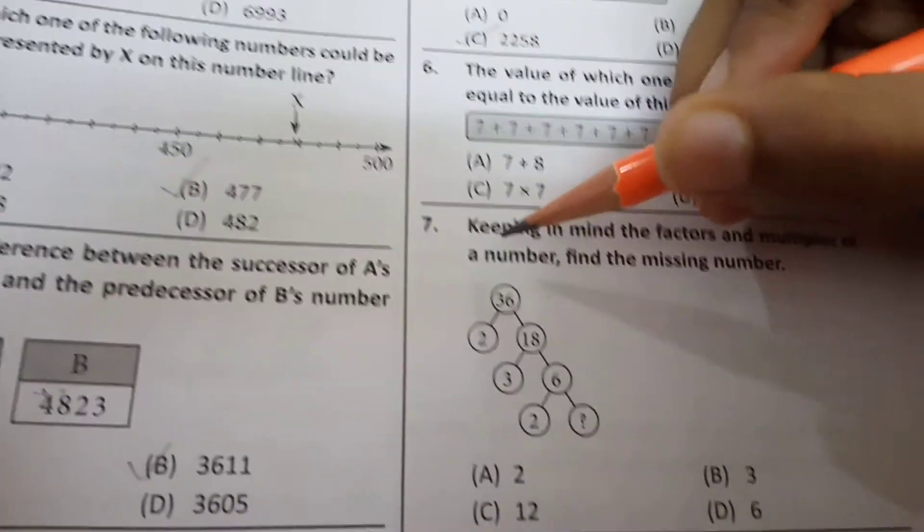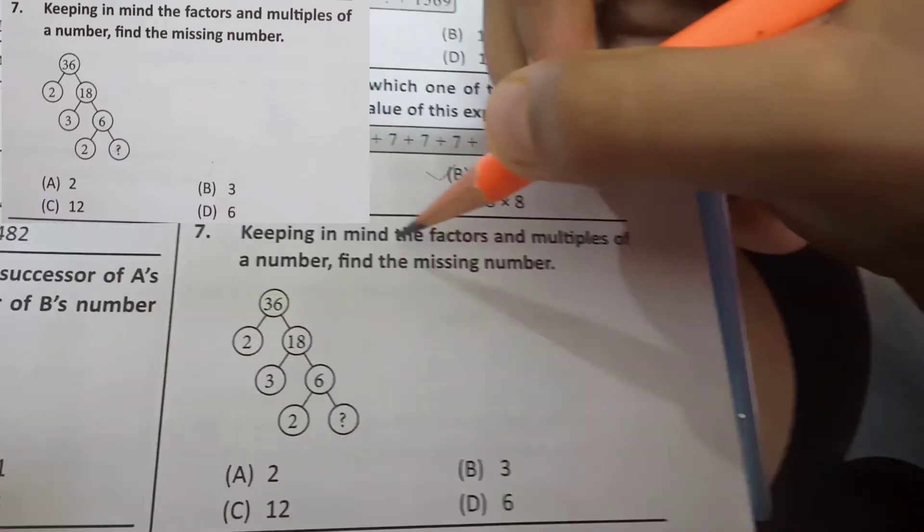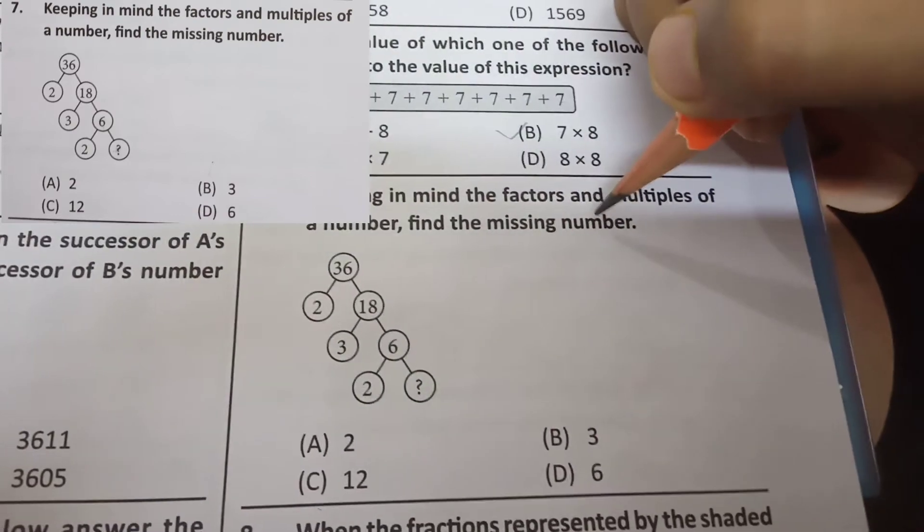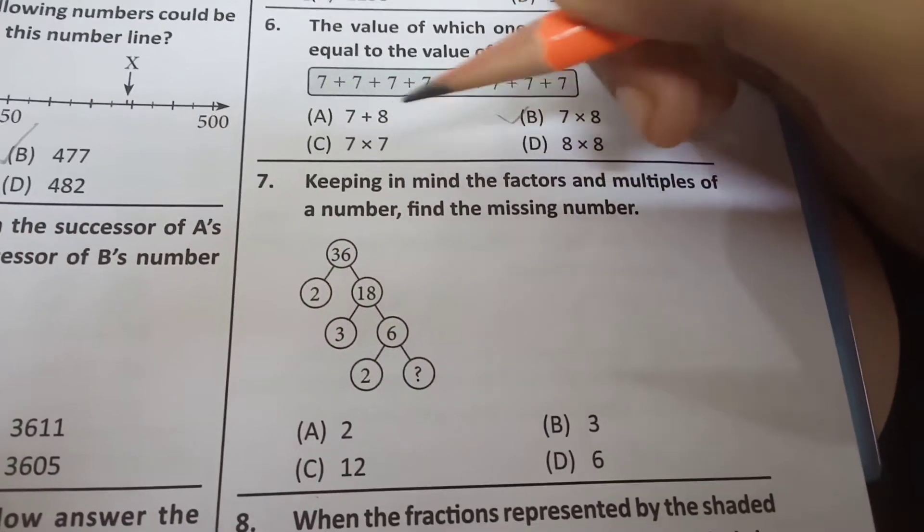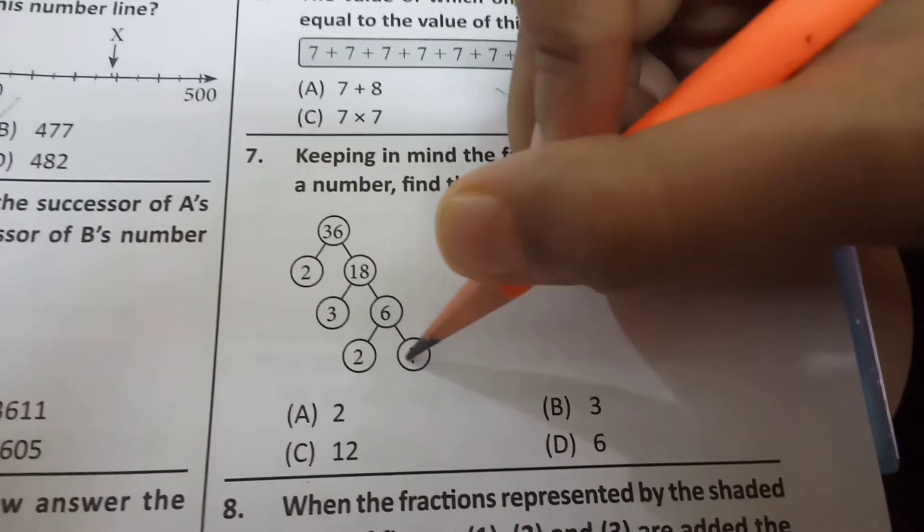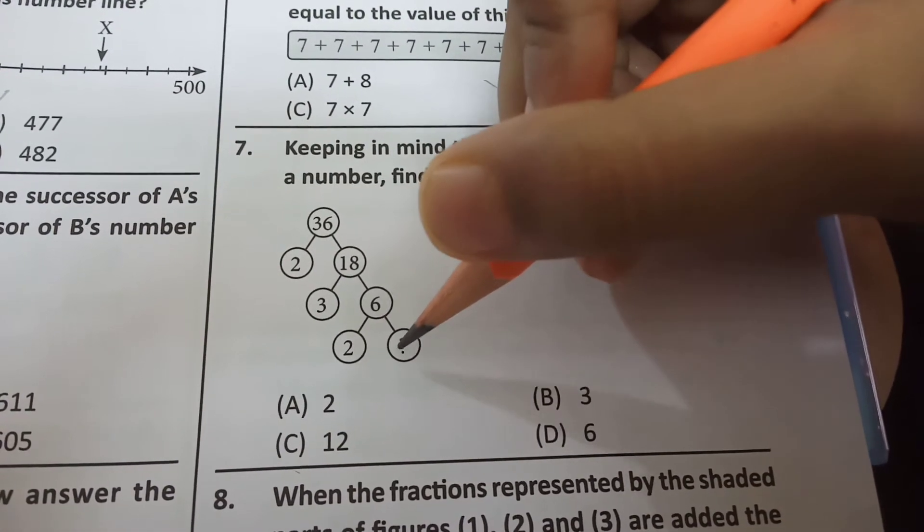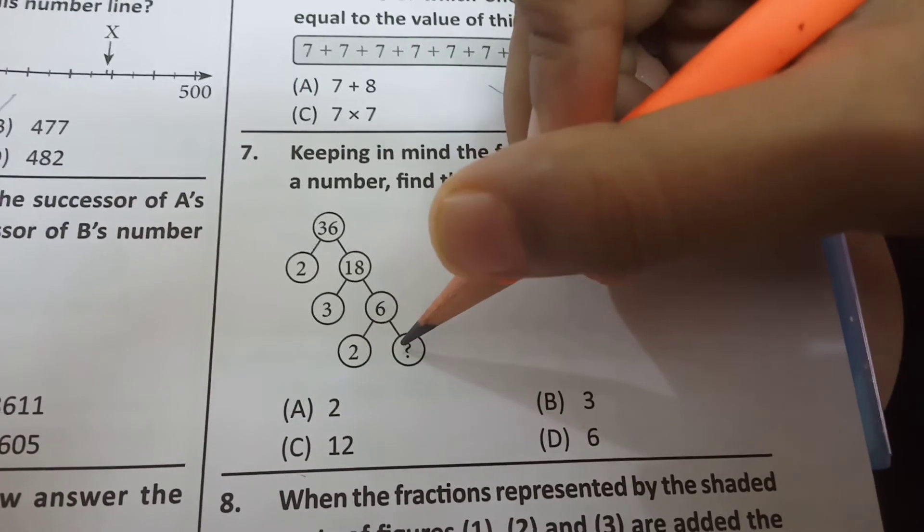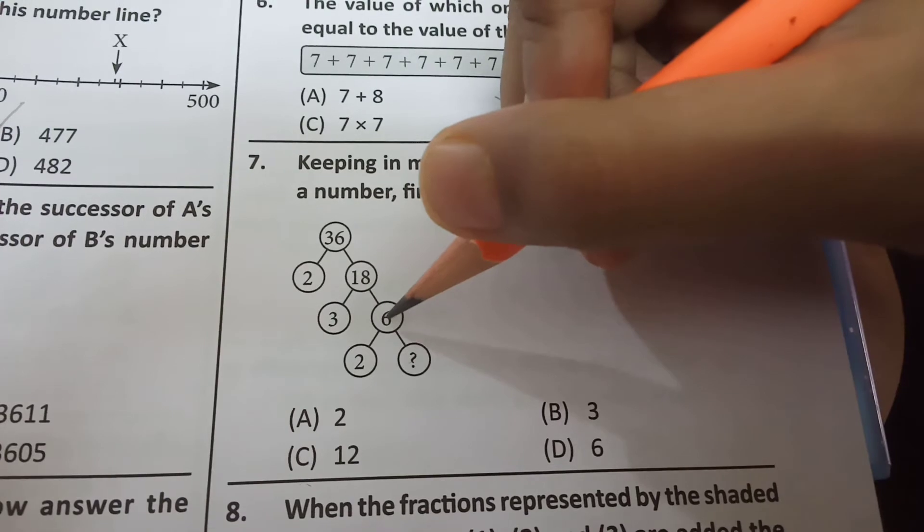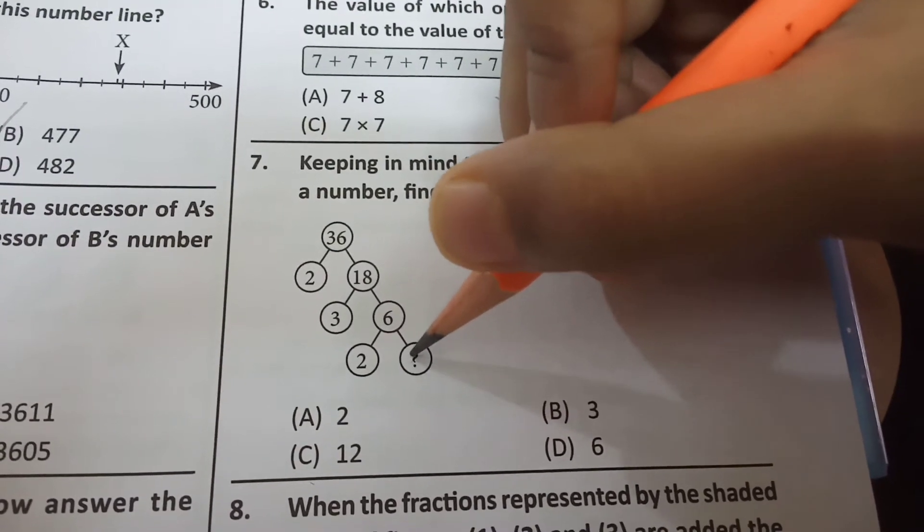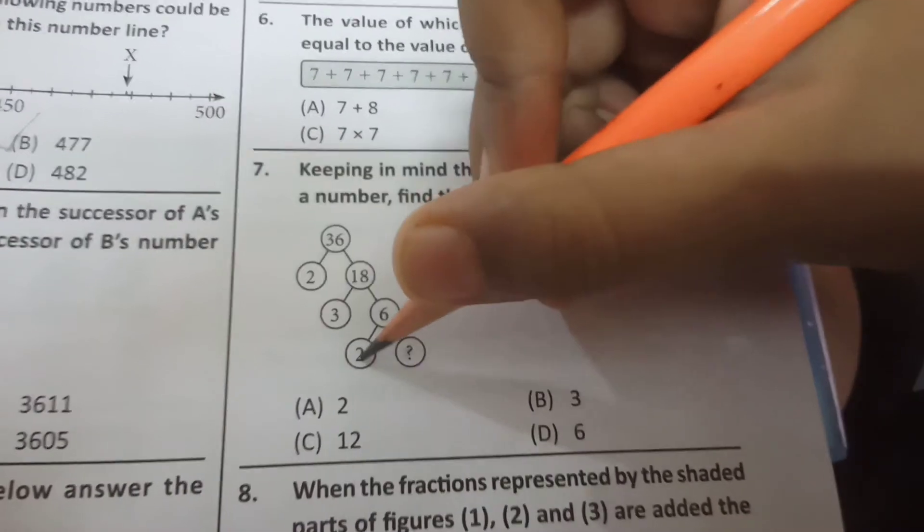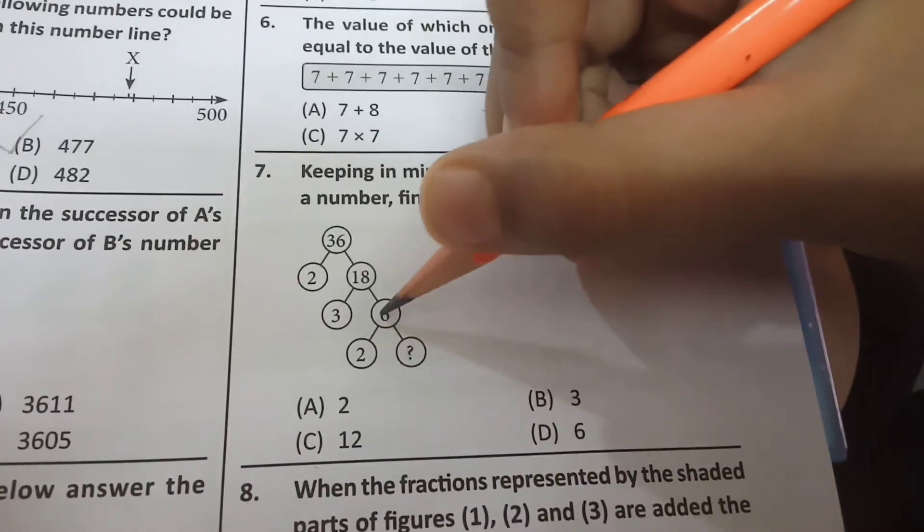Now next question. Keeping in mind the factors and multiples of a number, find a missing number. So here look, what we have to do. We have to put a number here that have to be a factor of the above number and has to be a number with which this number will multiply and the answer will be this.